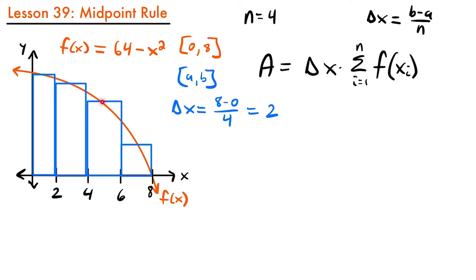Since the function crosses through the middle of the top of our rectangles, that lines up with the value in between each sub-interval. Our first rectangle goes from x equals 0 to 2, so the midpoint is at x equals 1. The next rectangle goes from 2 to 4, so the midpoint is 3. Then 5, and for our last one, 7. These values of 1, 3, 5, and 7 are our x sub i values. Plugging them into our function gives the height of each rectangle.